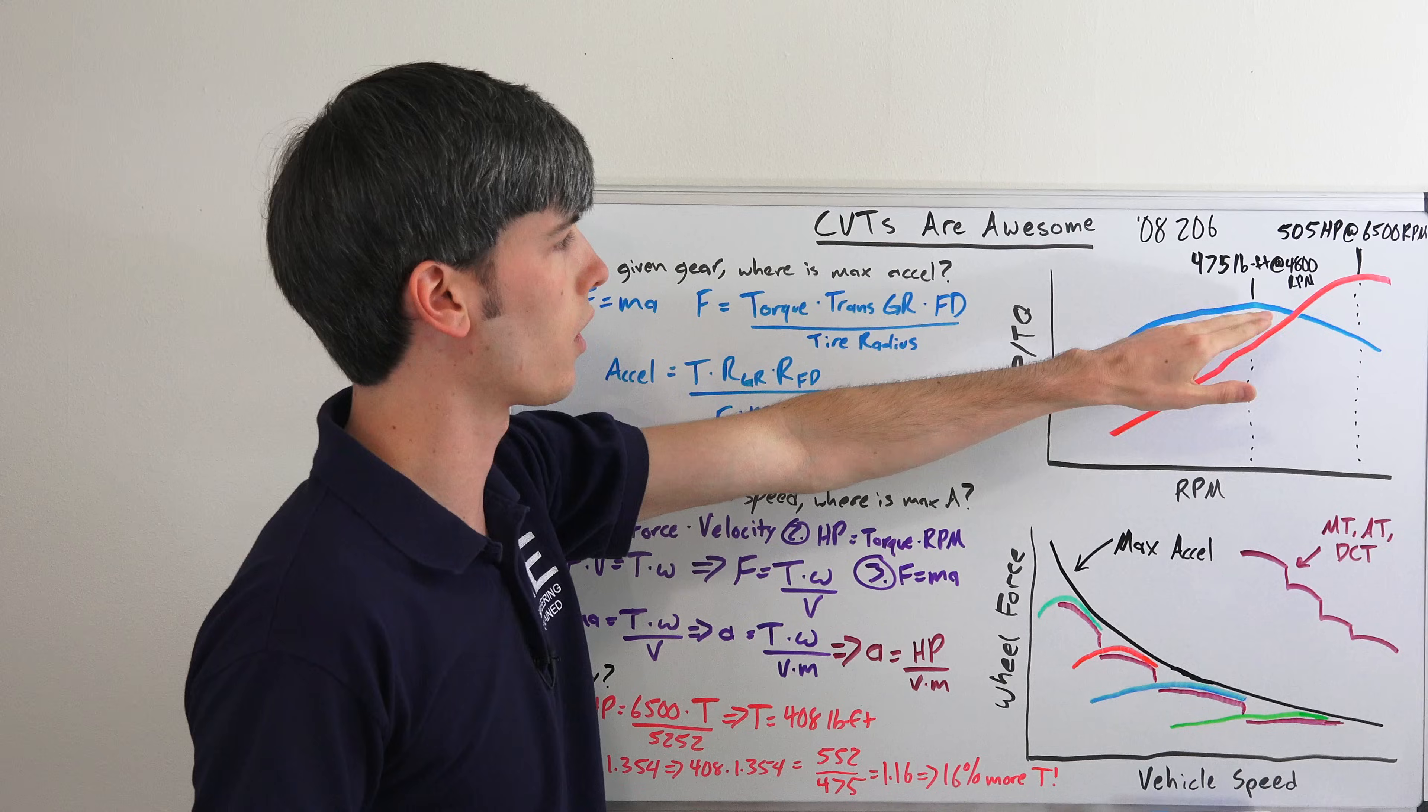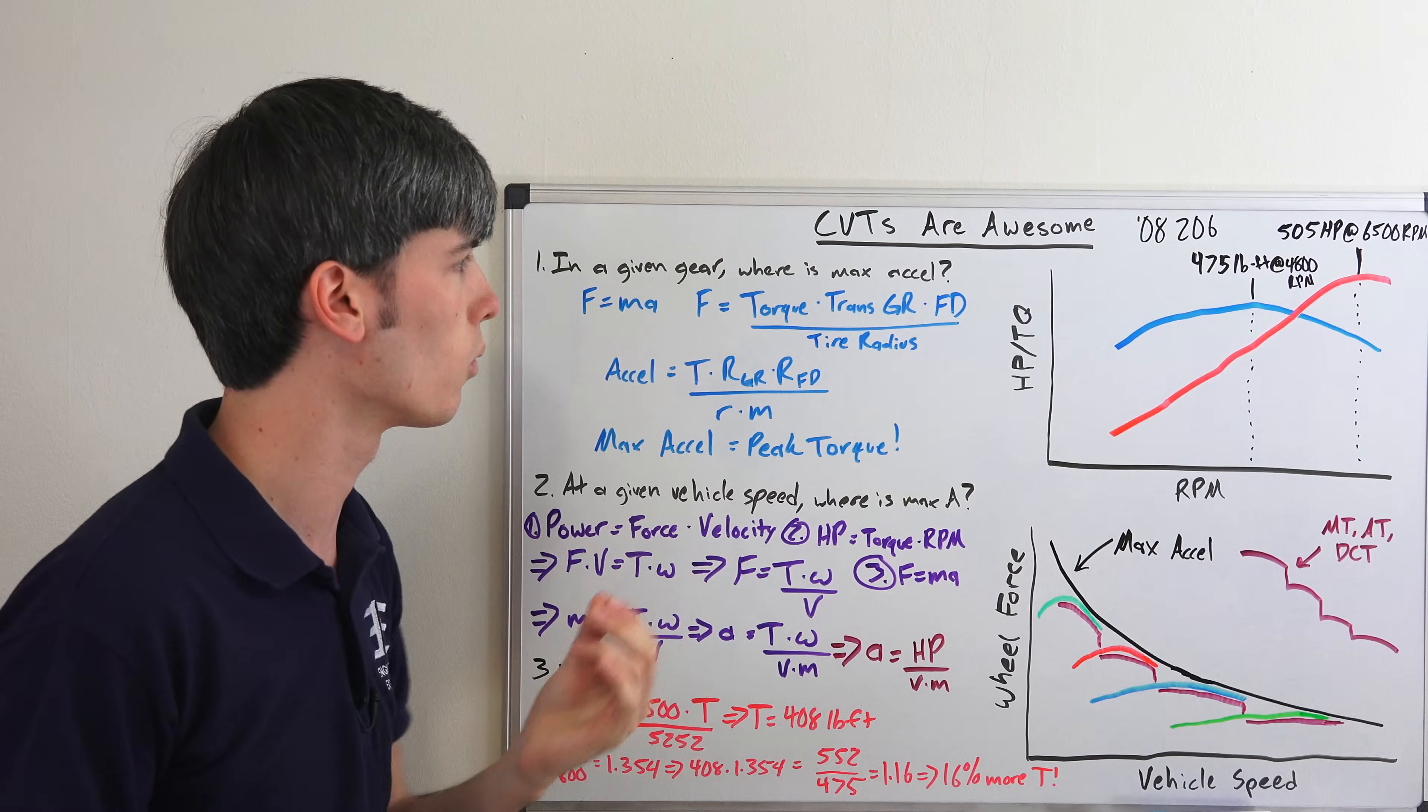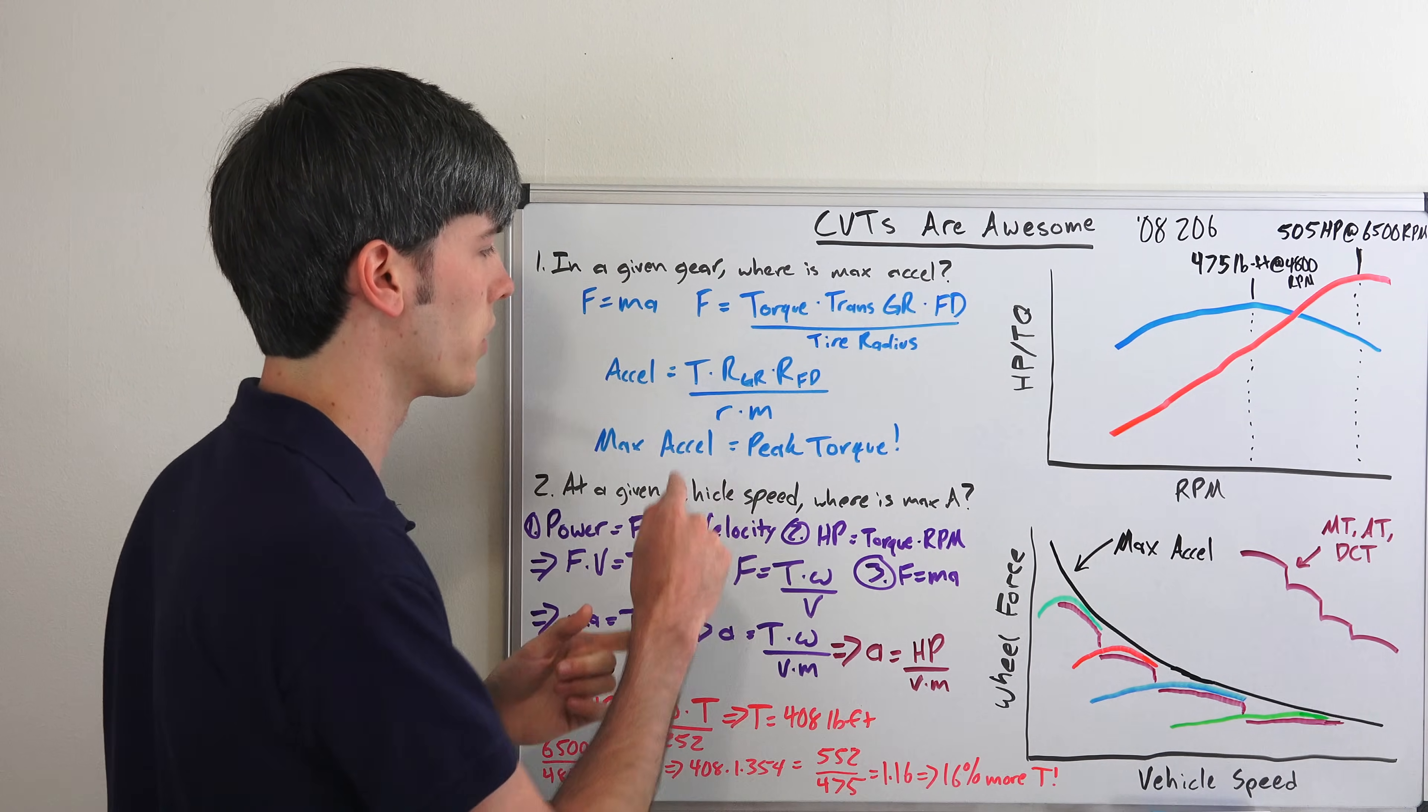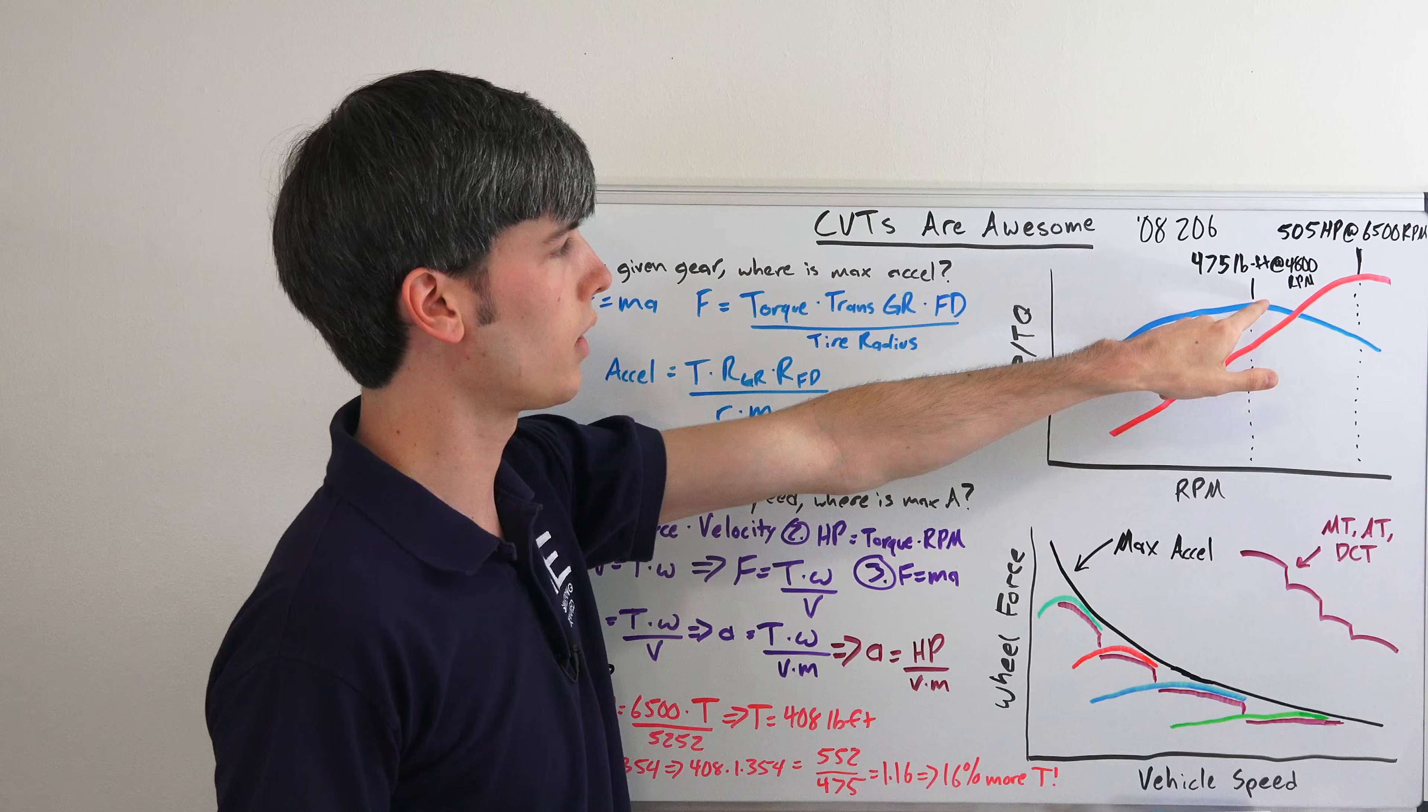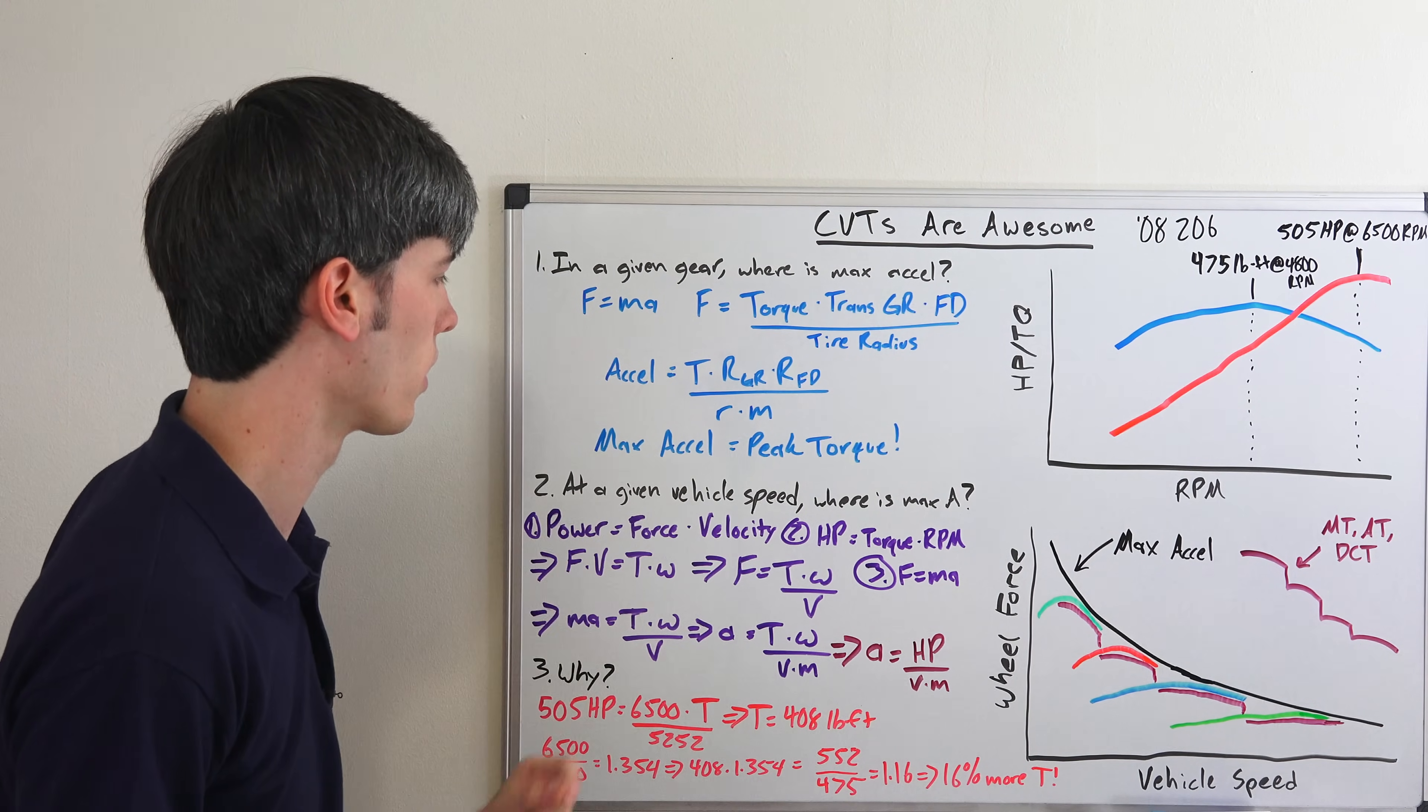It's of course going to occur at peak torque - if you're curious about the math, there's the math right there. The point is you're going to have a bunch of different variables, all of which, because you're in one gear, will be held constant except for torque. Your gear ratio is constant, your final drive is constant, the radius of your tire and the mass of your car is constant. So the only thing affecting acceleration that changes is torque, and when it's at its peak, that's when acceleration will be the highest. So maximum acceleration in a given gear is at peak torque.